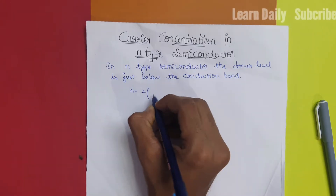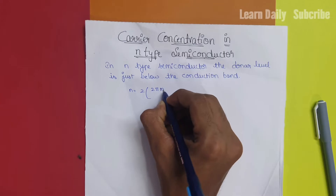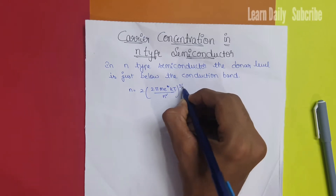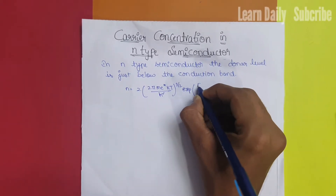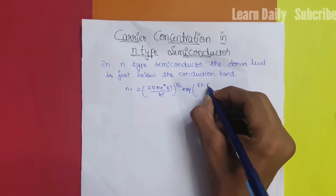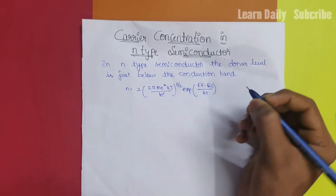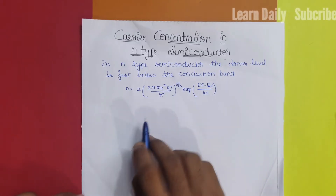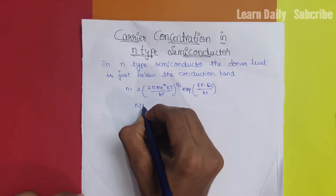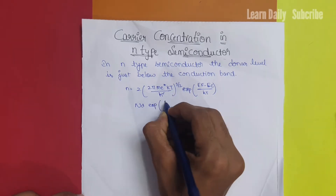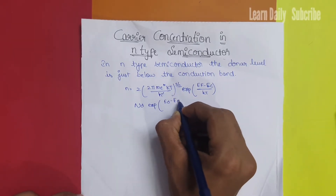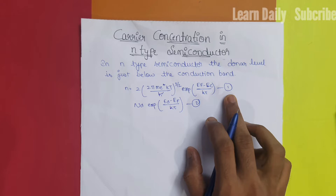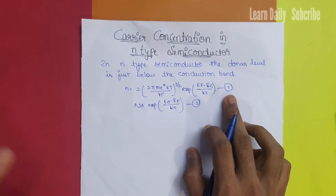This is equal to 2 into (2π me* kT / h²)^(3/2), exponential of (Ef minus Ec) by kT — that is the number of electrons per unit volume. In the donor level, we also have the exponential of (Ed minus Ef) by kT. This is the first equation and the second equation. The carrier concentration in N-type semiconductors is easy to find out.